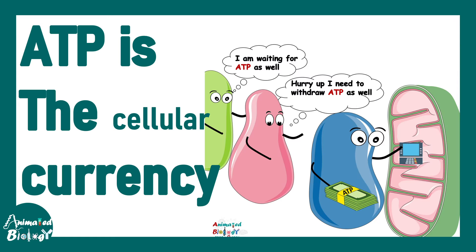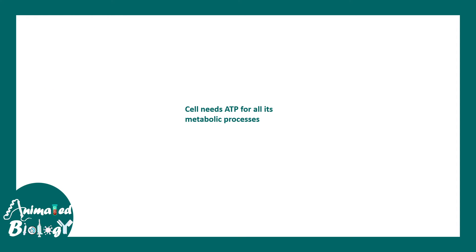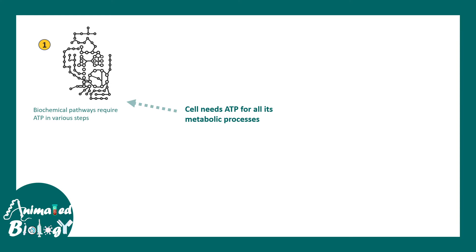ATP depletion is really crucial for the cell because ATP is the cellular energy currency. The cell basically needs ATP to do anything — just like you need cash or money every day to fulfill your needs, your day-to-day chores, your food, groceries, everything. The cell and the enzymes inside the cell need ATP for these kinds of purposes.